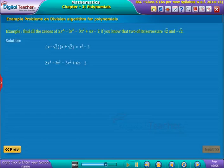be written as shown on screen. Now consider this as divisor and by dividing further we get remainder as 0 and quotient as 2x² - 3x + 1.